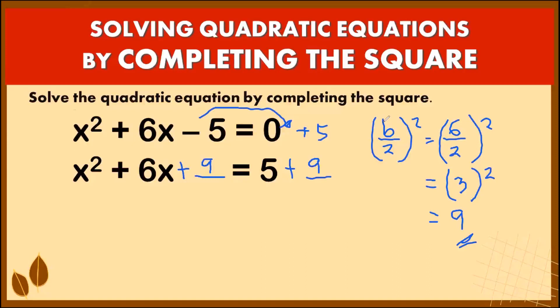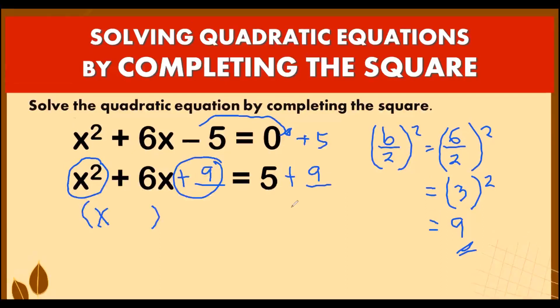On the left side, we find the square root of our first term, which is x, and the square root of 9, which is 3. Since 6 is positive, it must be plus 3. Then we put a square on the binomial, and that is equal to 9 plus 5, which equals 14.